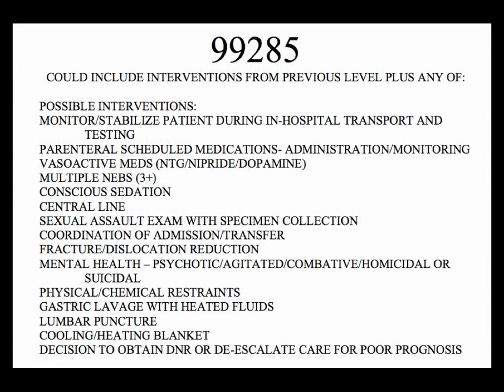Level 5, code 99285, represents the highest level of complexity. The risk of morbidity without treatment is high, with extreme to high risk of mortality without treatment, or high probability of severe prolonged functional impairment. Examples include: a complicated overdose requiring aggressive management; rapid onset of elevated heart rate requiring IV drugs; an active upper GI bleed; a motor vehicle collision with symptoms compatible with intra-abdominal or multiple extremity injuries; sudden onset of the worst headache ever with stiff neck, nausea, and inability to concentrate (suggestive of meningitis); new onset cerebrovascular accident; and acute febrile illness associated with shortness of breath or altered level of consciousness.